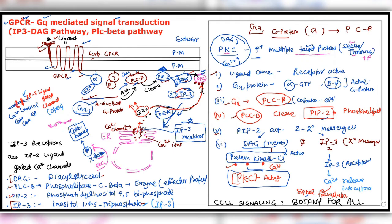The ER membrane has IP3 receptors that open calcium channels — because the channel was IP3-gated, it opens when IP3 arrives. Calcium ions come into the cytosol. These calcium ions carry out their own signal transduction — enabling whatever cell response is required — and simultaneously they further activate protein kinase C alongside DAG. PKC then phosphorylates target proteins for signal transduction, i.e., the cell response. This is the IP3-DAG pathway, also called the PLC-beta pathway, which is a GPCR pathway.